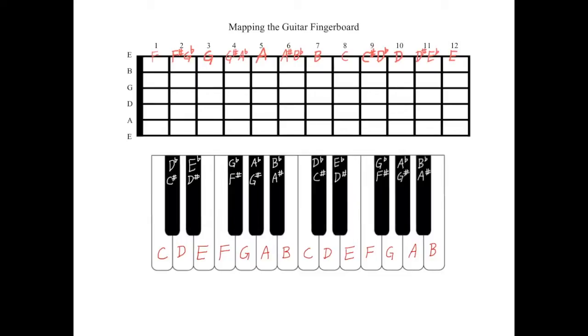Now that we have applied our knowledge of half steps on the piano to the E string on the guitar, we have the knowledge to diagram the entire fingerboard. The second string on the guitar is the B string.